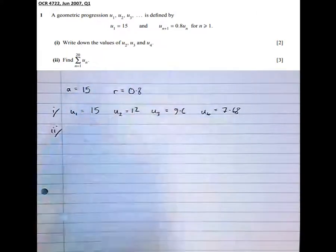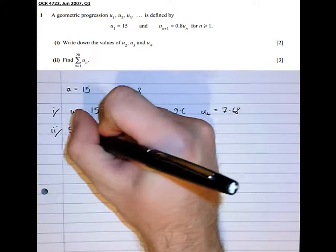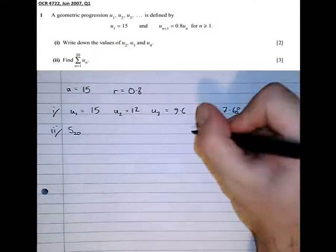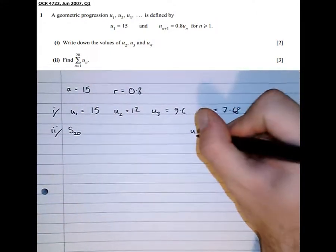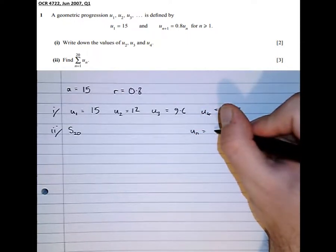Part two, find the sum of all of the terms from the first term to the 20th, i.e. find S20. So this is where we need to consult our formula sheet. The formula sheet tells us three formulae about geometric sequences.